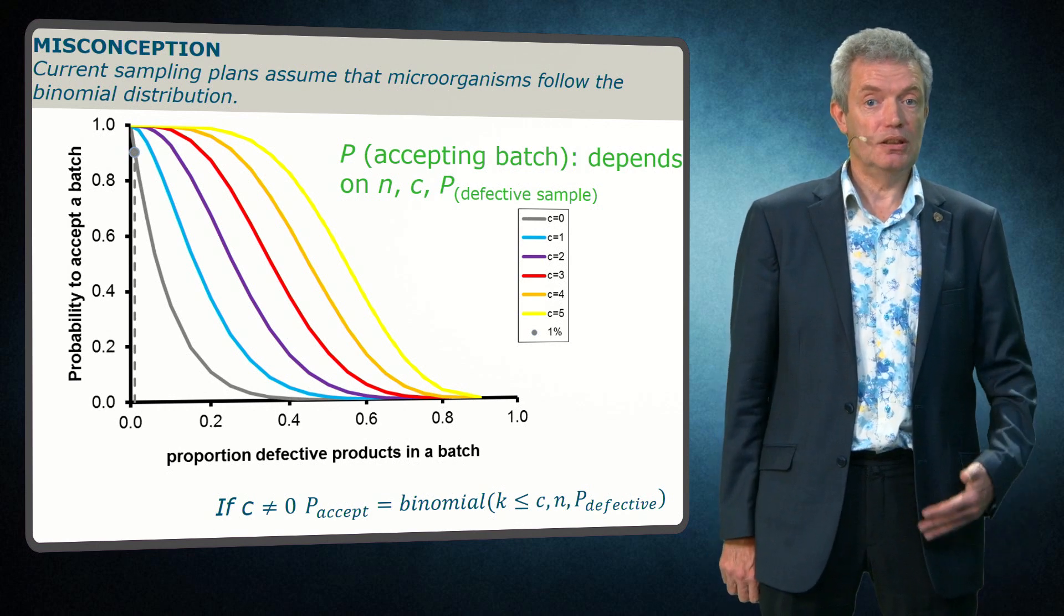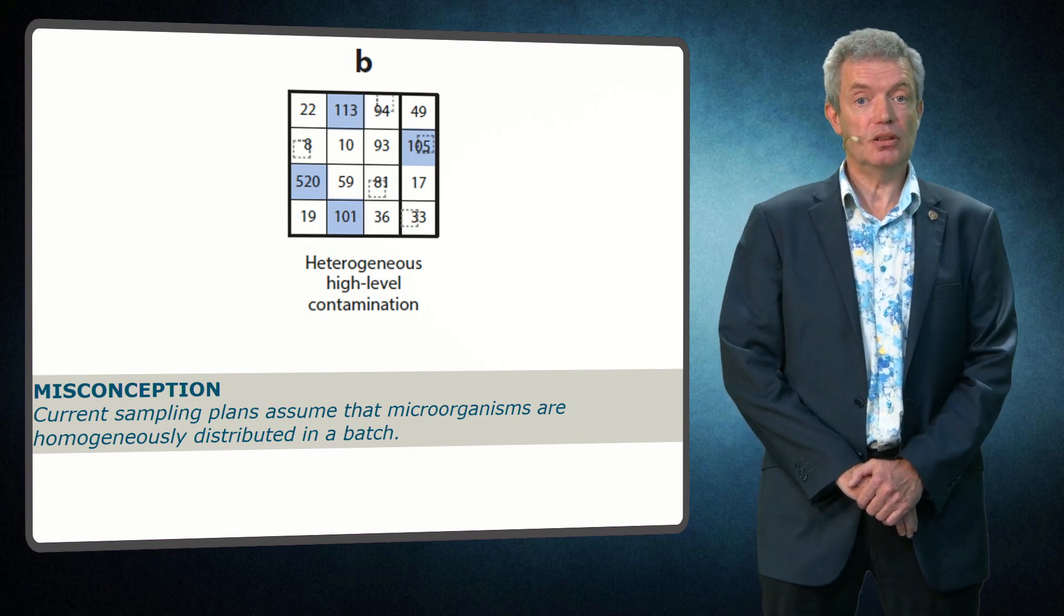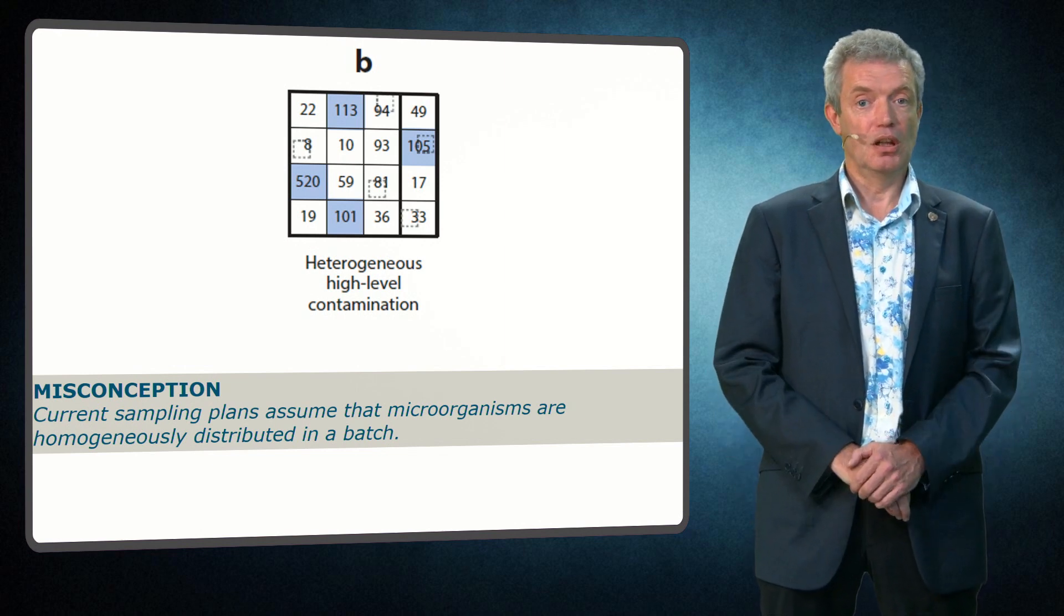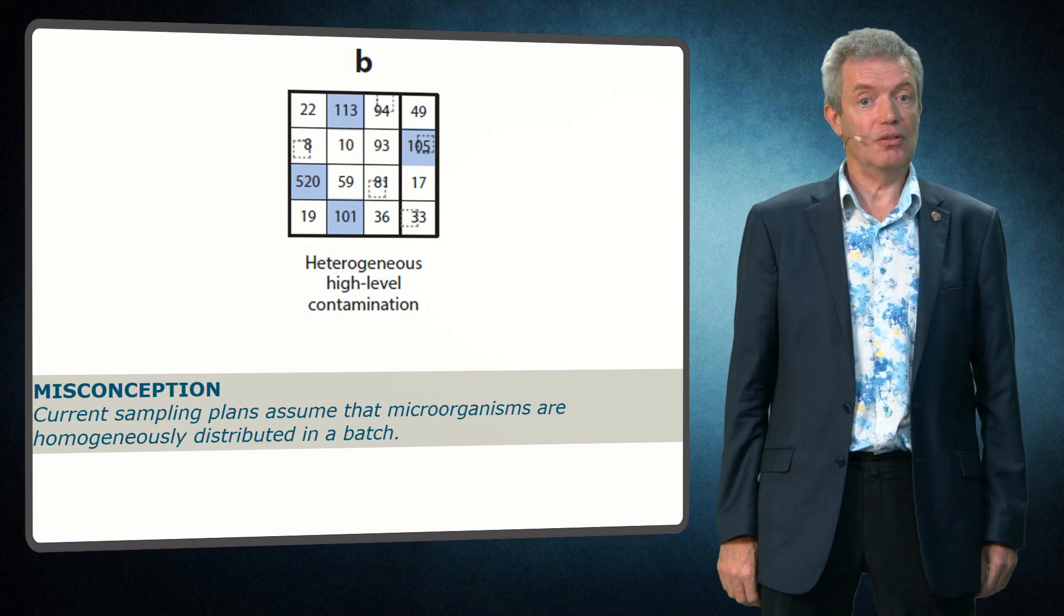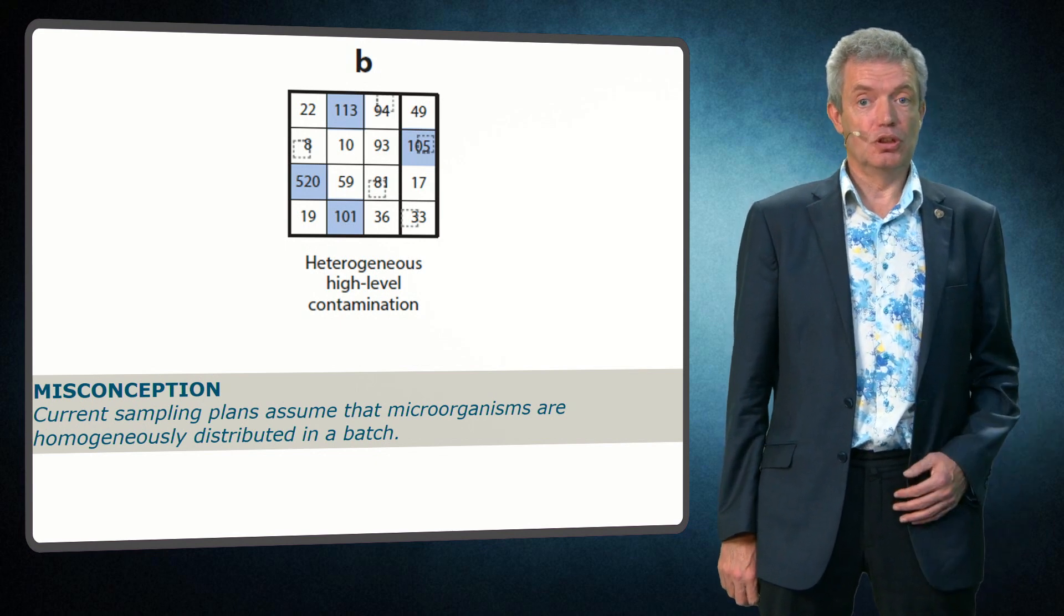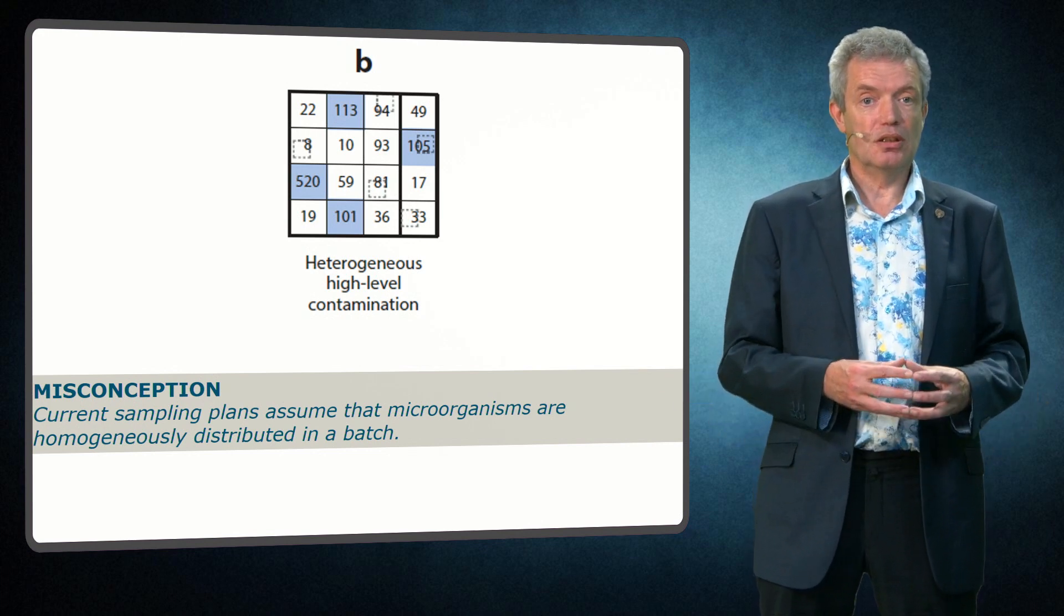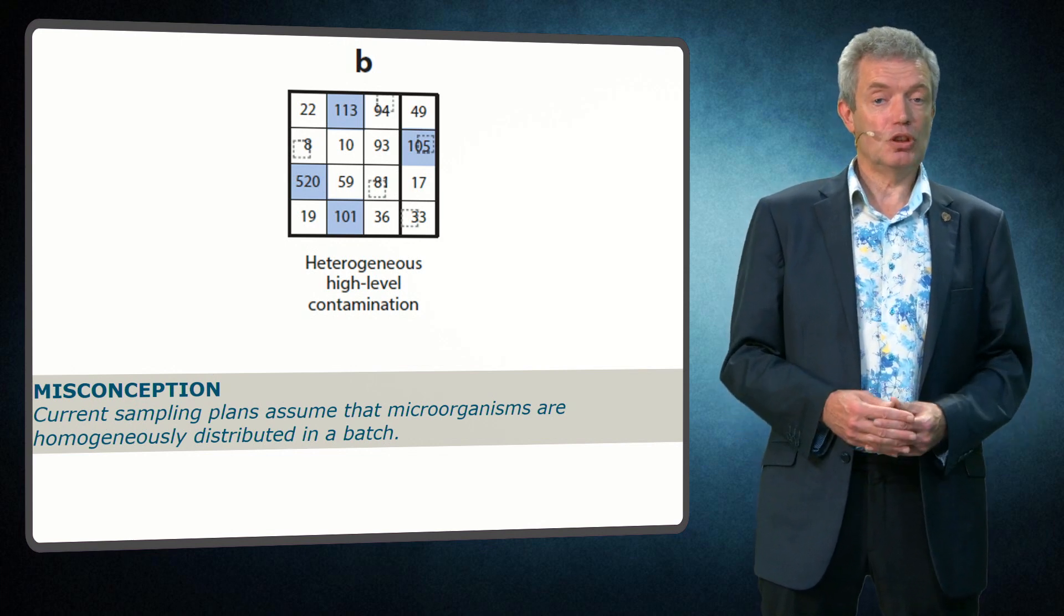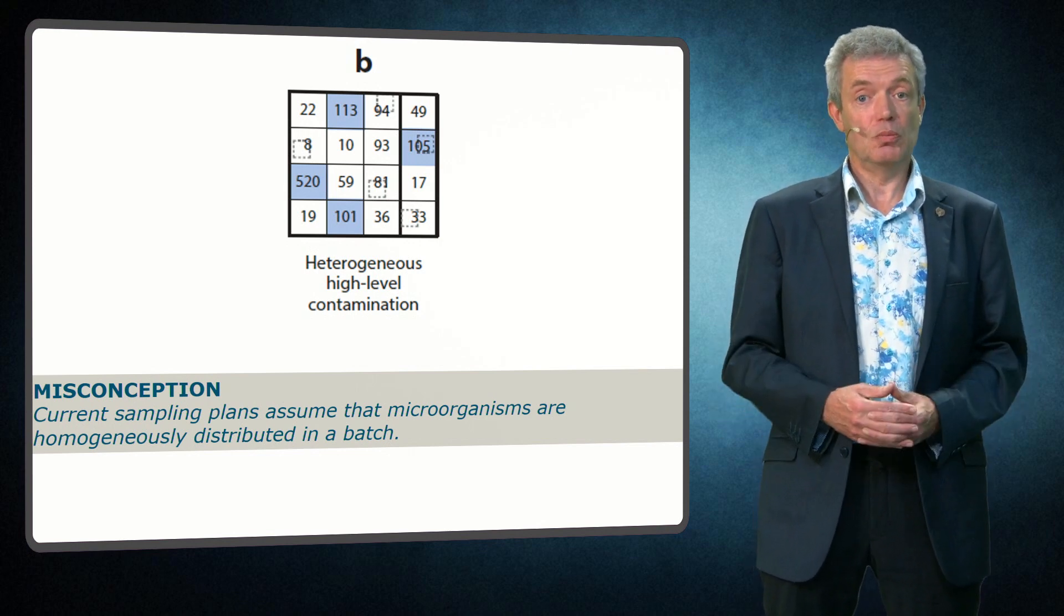And that goes directly to another misconception, that for sampling plans it is assumed that microorganisms are homogeneously distributed in a batch. Until now indeed I have made that assumption for the first step of the explanation. But the explanation goes further. In reality the performance of sampling plans is often investigated for non-homogeneous distributions. If we can assume a homogenous distribution, we could not take 30 samples of 30 grams each, rather we could simply take 300 grams of sample, since the detection probability will be equal for the homogenous distribution. That would be much easier. But since we know that the organisms are often not homogeneously distributed, we take more smaller samples.